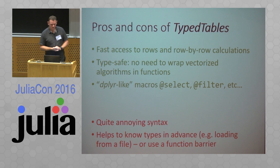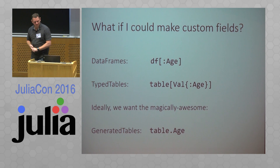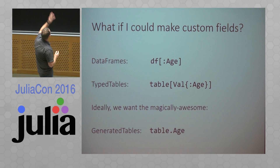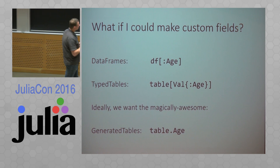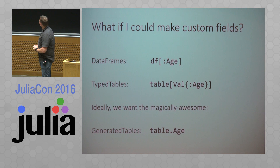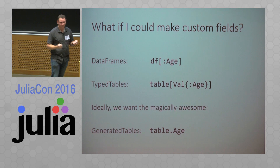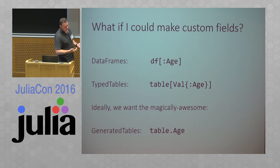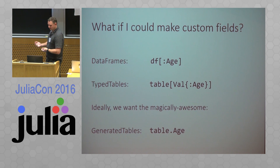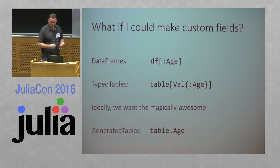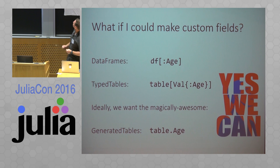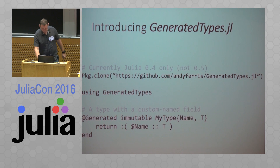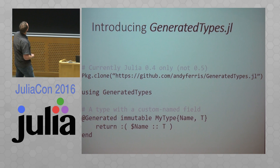So what if we could fix this syntactical problem? In DataFrame you can just access a column by its symbol, but in TypeTables you have to add this Val. What we really want is a field called 'age' on the table — maybe we could use a macro for that syntax. But can we do that in native Julia? It's a bit difficult — the type system in Julia doesn't really let you define the names of fields and you can't overload getfield. But it turns out yes, we can actually create something like a generated type which lets you do this.